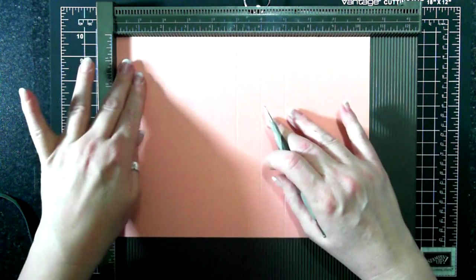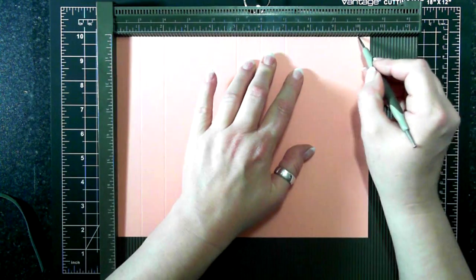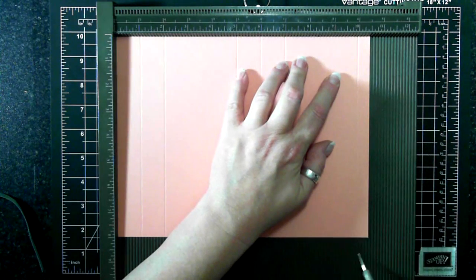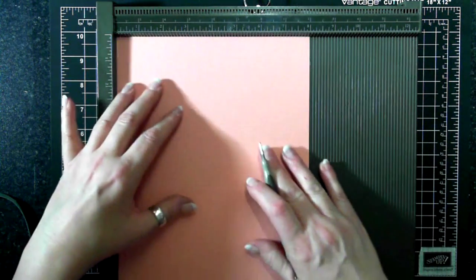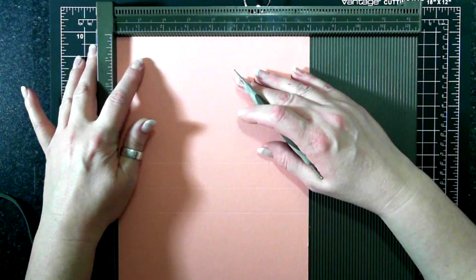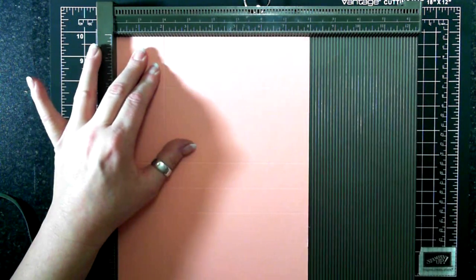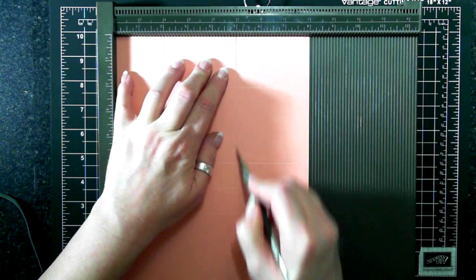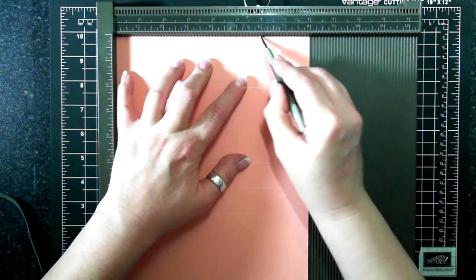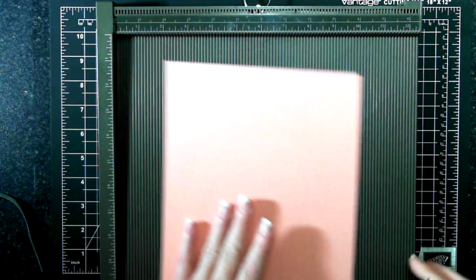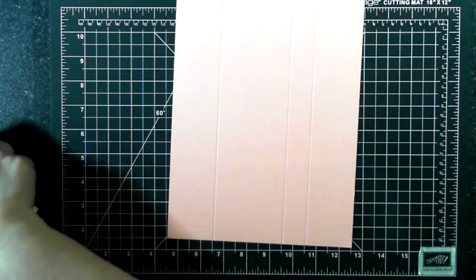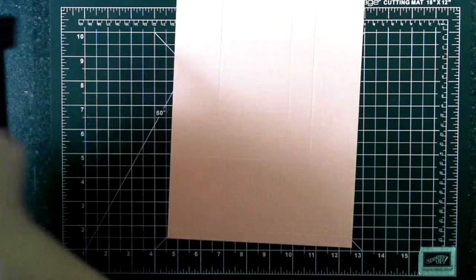And then 10. And then we're going to flip it to our short side and we're going to score at 2, 5, and 6. And that's all the scoring we're going to need for today. So the example...